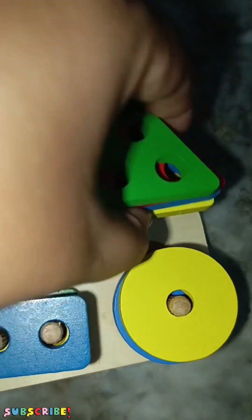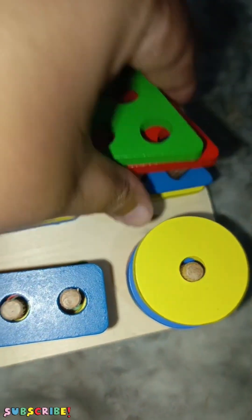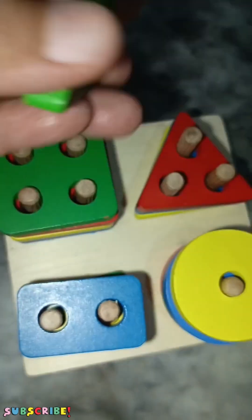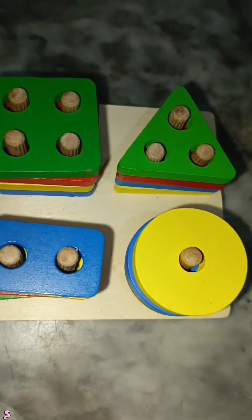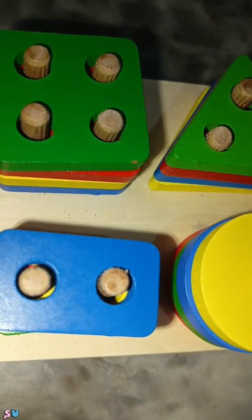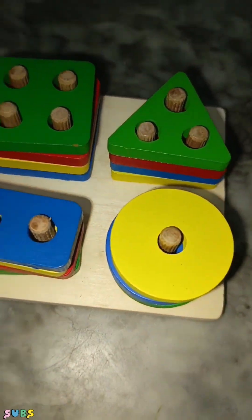Now we have triangle: yellow, blue, red and green. So these are 2D shapes.